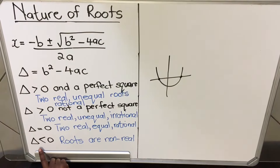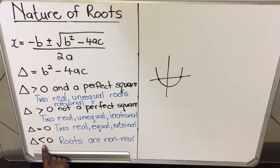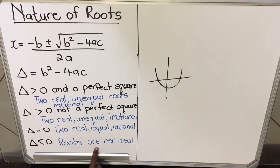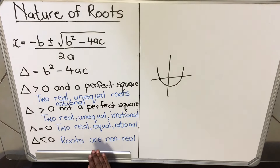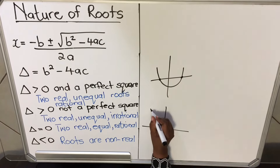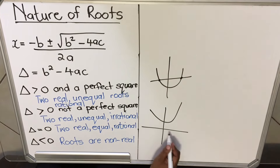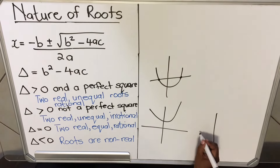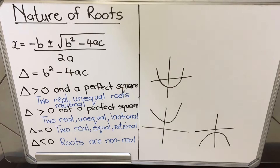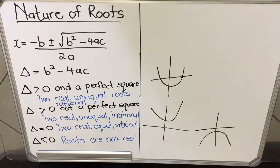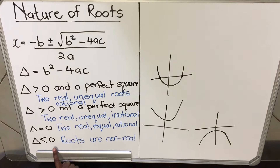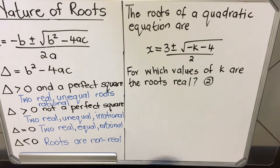When delta is less than zero — meaning you get a negative number — your roots will be non-real. The graph will not cut the x-axis at all. If a is positive the parabola opens upward and stays above the x-axis; if a is negative it opens downward and stays below. In both cases your roots are non-real.